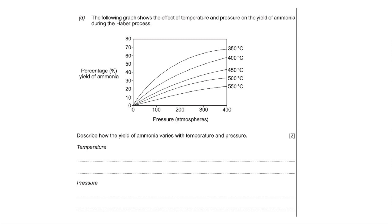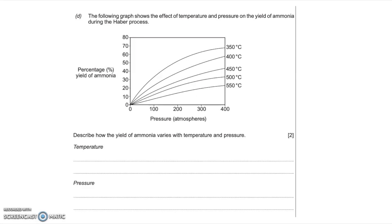Have a go at the next part of this question — read the question, pause the video, have a go, and then we'll go through the answers. In this next part, we're shown a graph which shows the effect of temperature and pressure on the yield of ammonia during the Haber process. The question asks you to describe how the yield of ammonia varies with temperature and pressure.